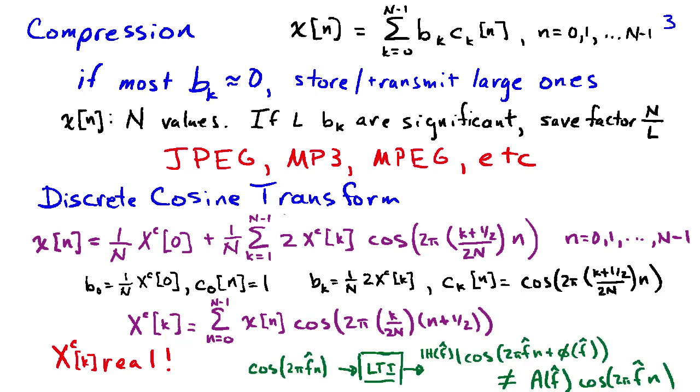However, in contrast to the discrete Fourier transform, cosines don't share the same property that complex sinusoids do with respect to linear time invariant systems. If I apply a cosine of frequency f-hat to a linear time invariant system, the output is not some factor multiplied times the cosine, but rather the output has the magnitude of the frequency response in front of the cosine.